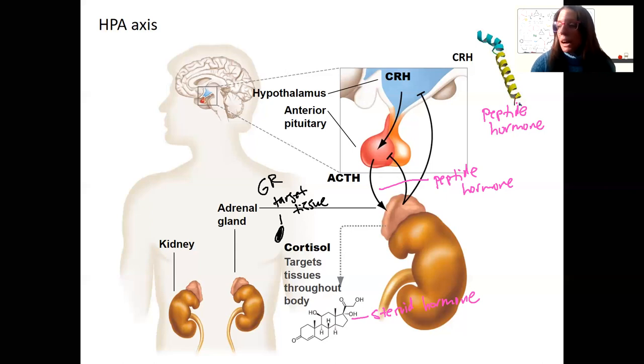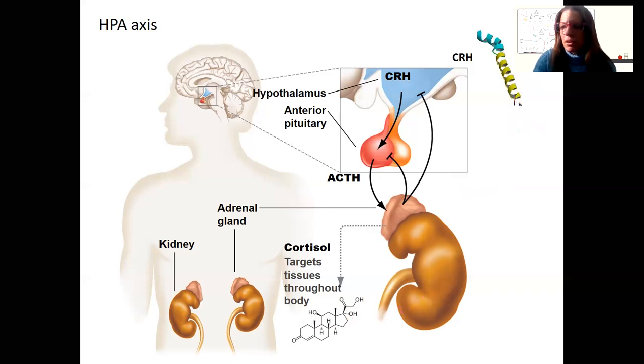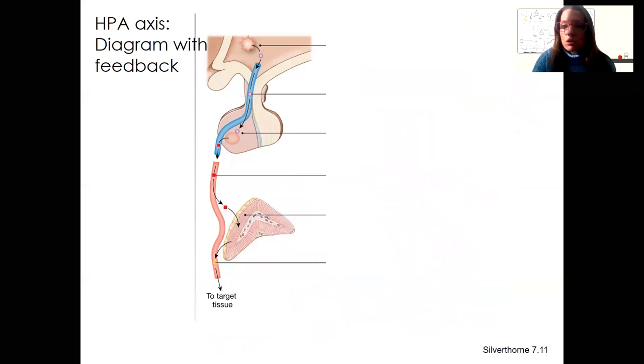Cortisol also feeds back to turn off signaling in the hypothalamus and pituitary. So the hypothalamus and pituitary, they both have glucocorticoid receptors as well. Cool, huh? Okay, let's draw this with the feedback. I want to draw it out first. So I'm going to go through and label these.